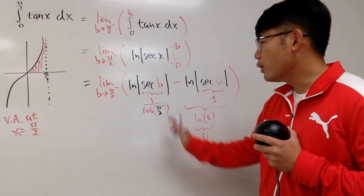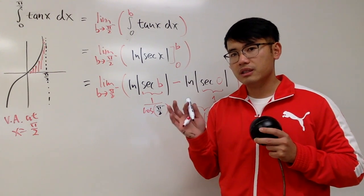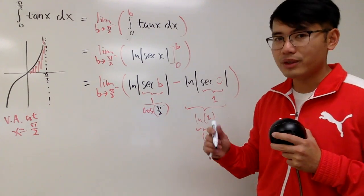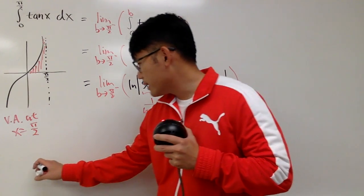Now, we know cosine of pi over 2 is 0. What, going to look at cosine of pi over 2 minus, what does that mean? Well, let's look at the unit circle real quick.